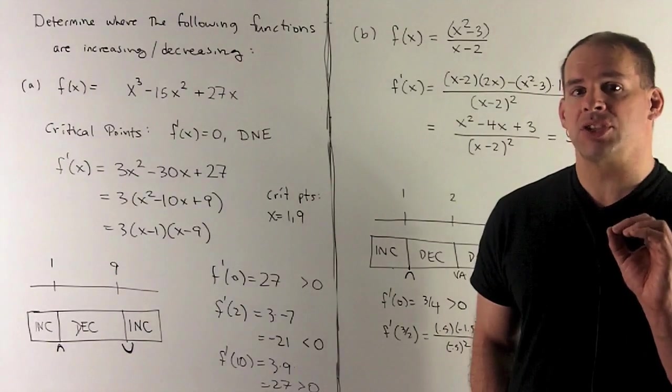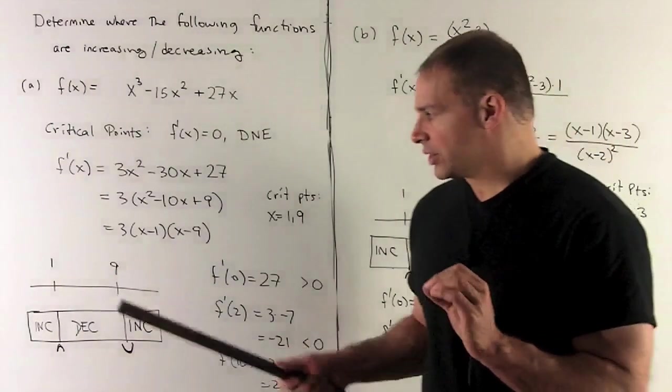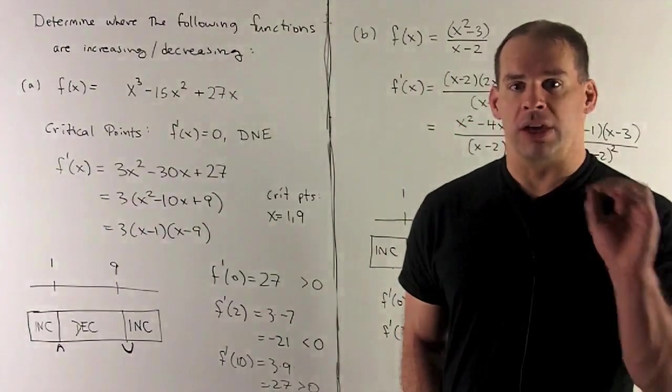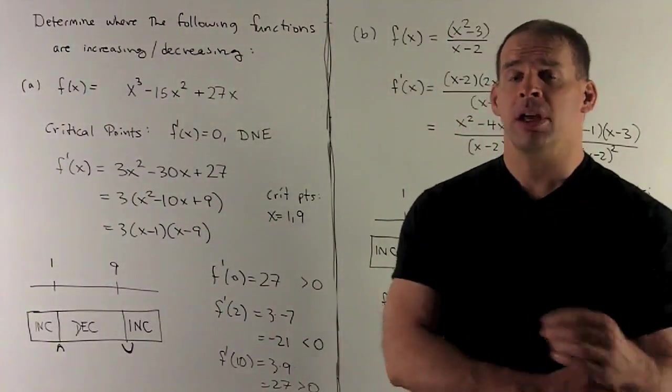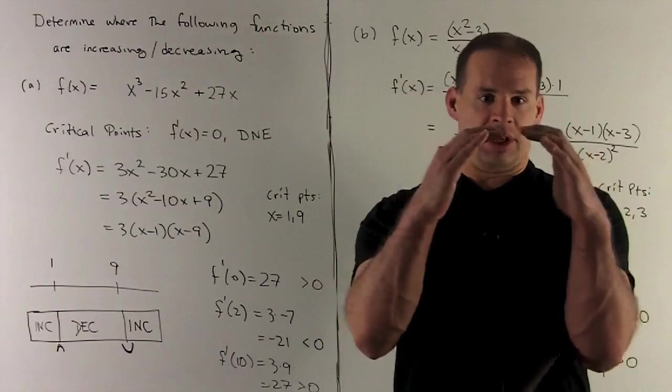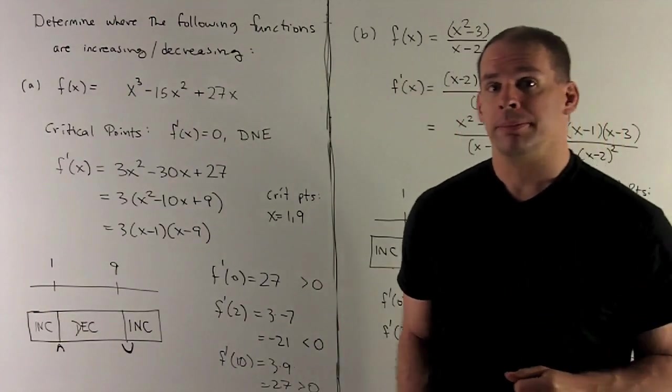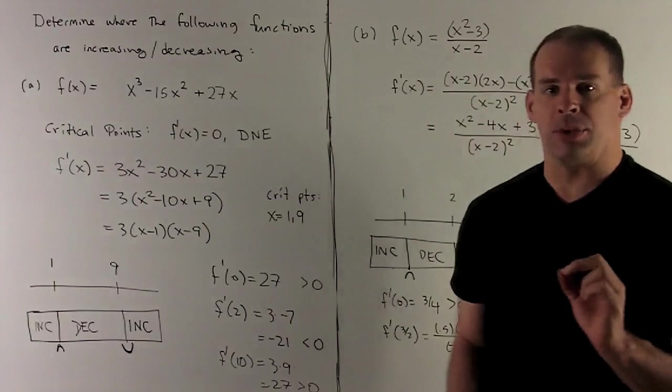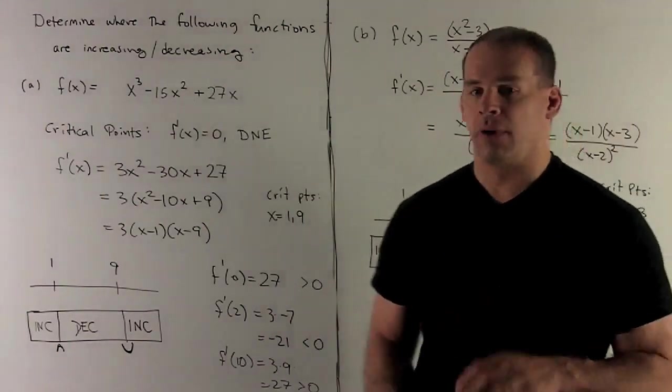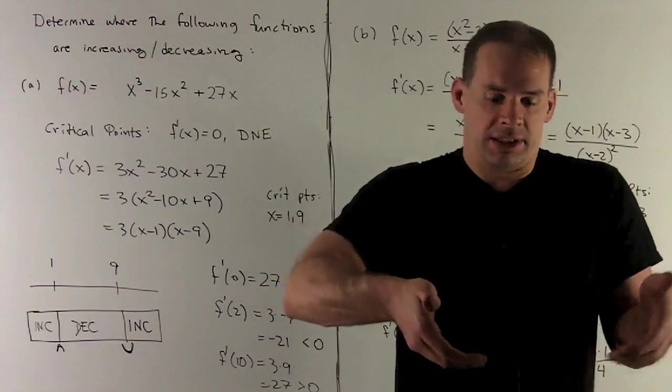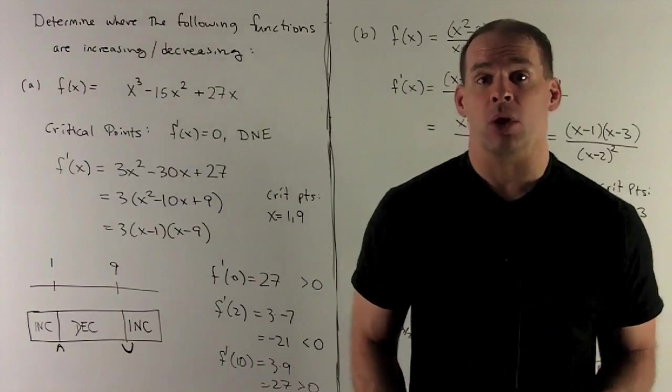We want to drill a little bit further into this. We would note, since at 1, I'm going from increasing to decreasing, that's going to be a local maximum. At our point x equal to 9, we'll note we're going from decreasing to increasing. That's going to be a local minimum.